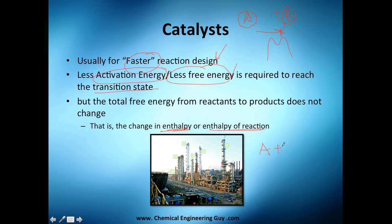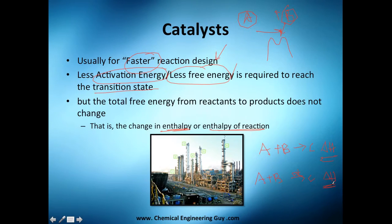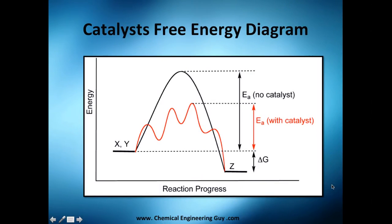The enthalpy of reaction is not going to change. If A plus B reacts to form C and you have a certain delta enthalpy, even if you use a catalyst and the reaction goes faster, you will still have the same change in enthalpy. That's very important — the catalyst lowers the energy barrier but does not alter the overall thermodynamics.